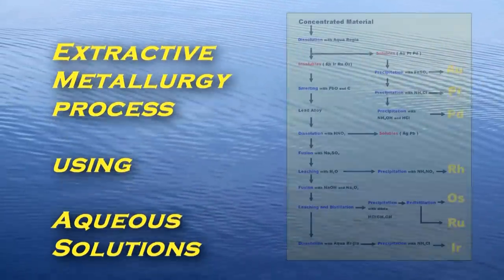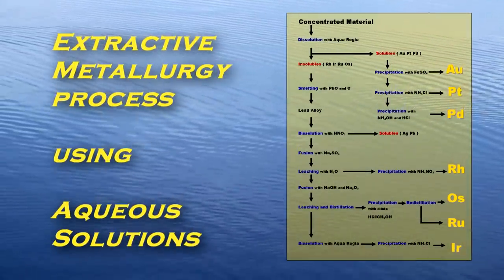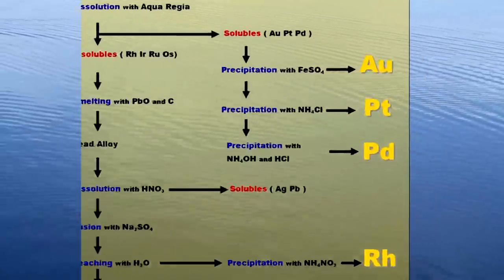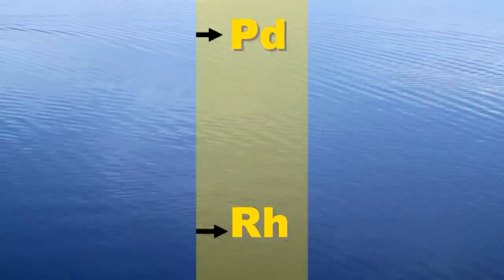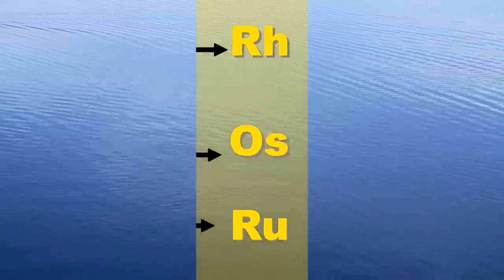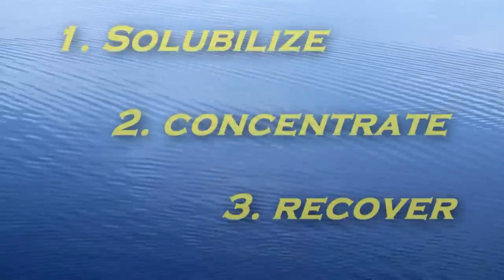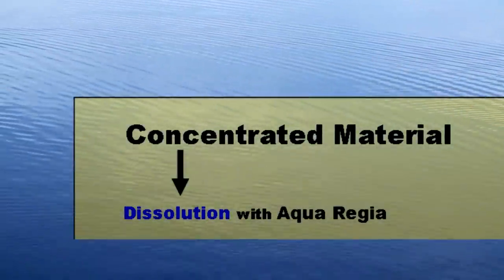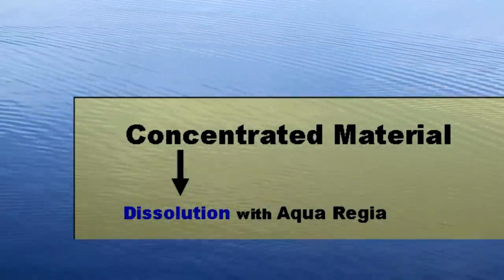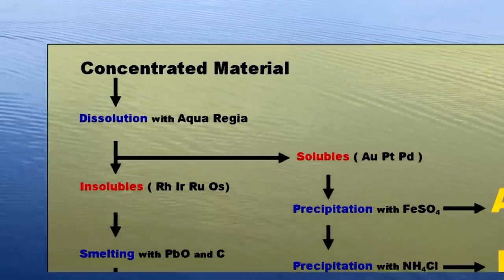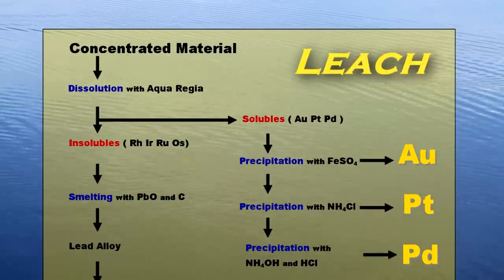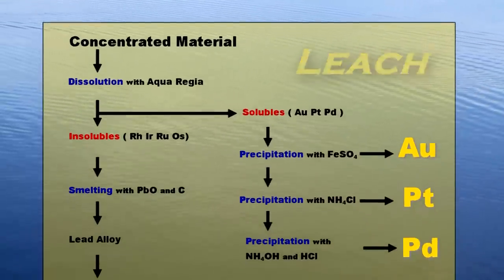Hydrometallurgy is an extractive metallurgy process using aqueous solutions to recover metals. It involves technologies which solubilize, concentrate, and then recover specific metals. For example, a first step may be to chemically dissolve, or leach, a material to eventually extract metals by means of precipitation or electrically reducing the metals.